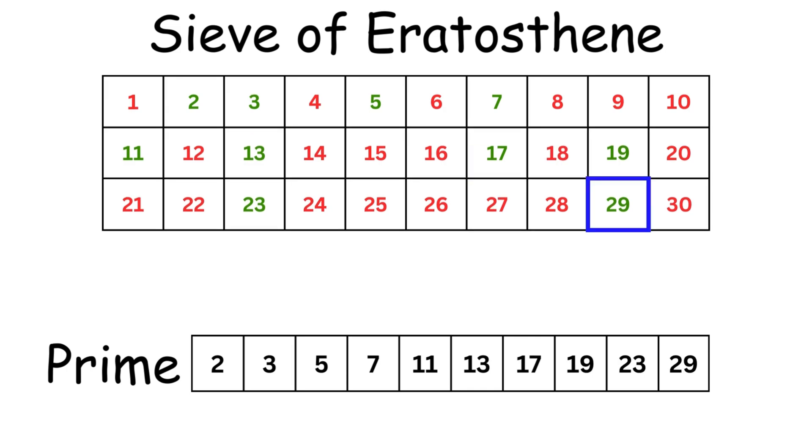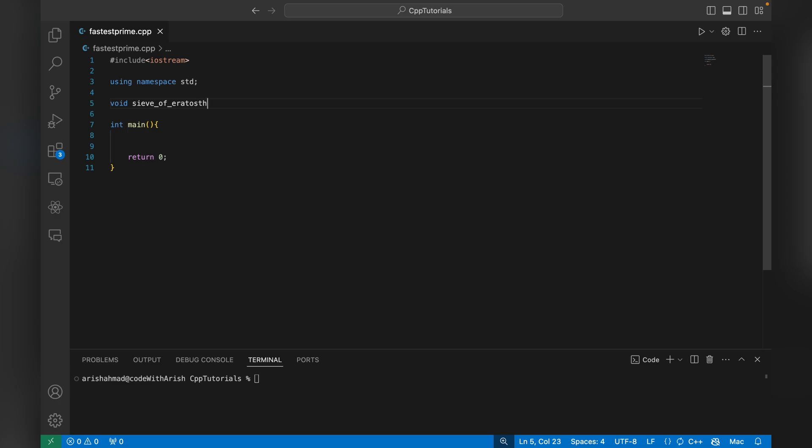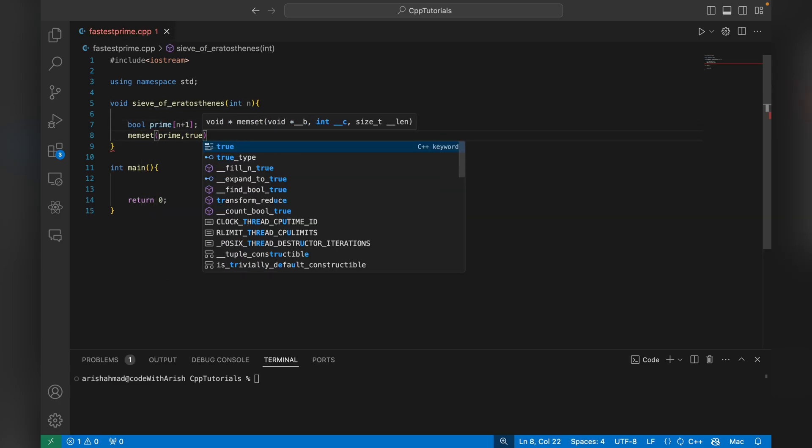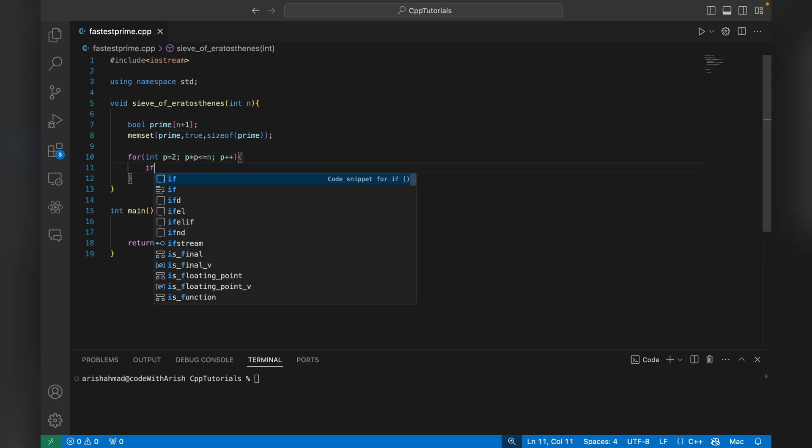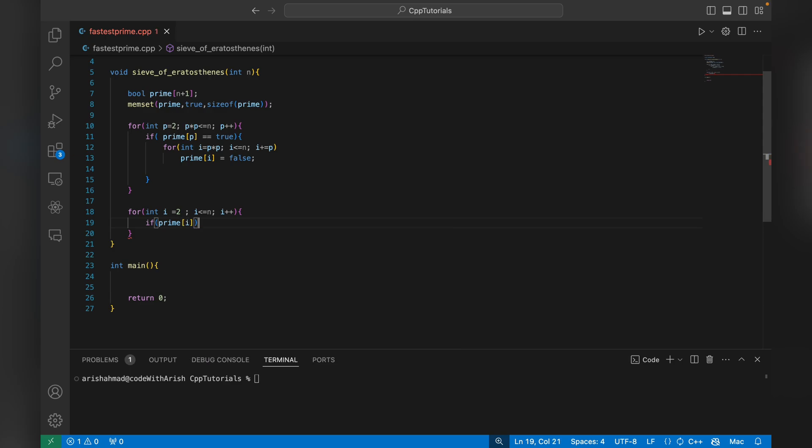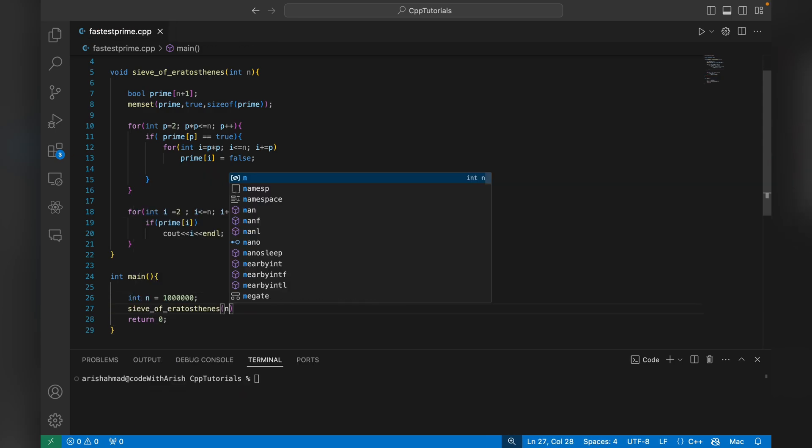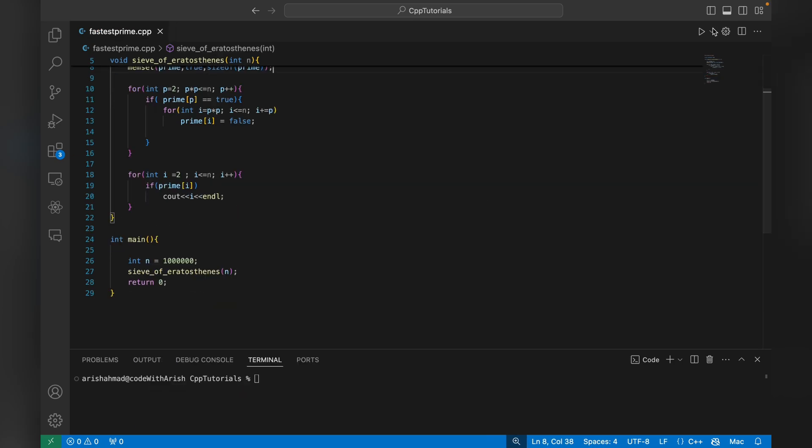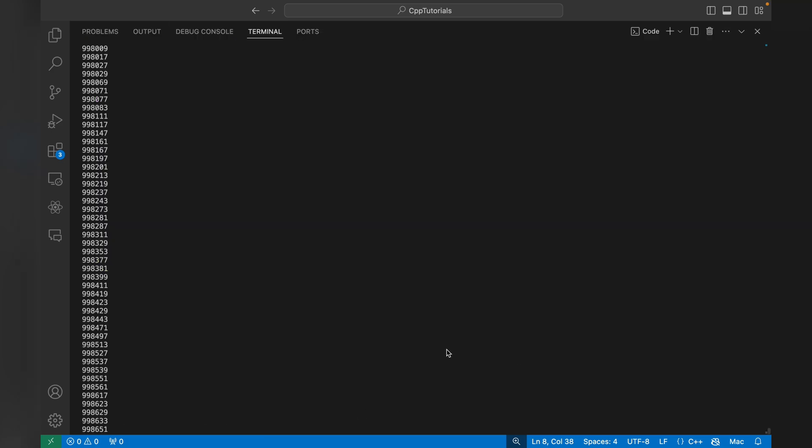Let's try it out in VS Code. Here I am trying to find prime numbers between 0 to 1 million. Let's run this. As you can see, it took less than 2 seconds to print prime numbers between 0 to 1 million.